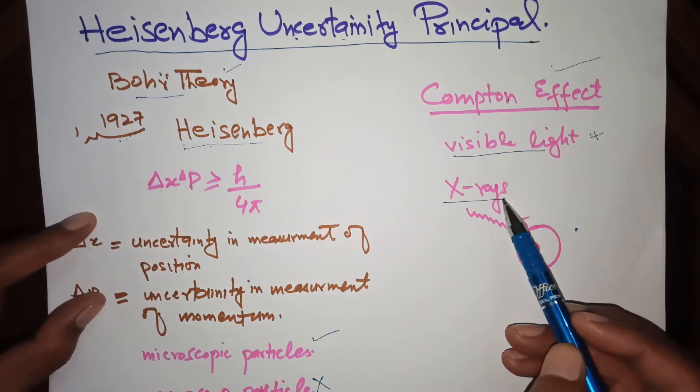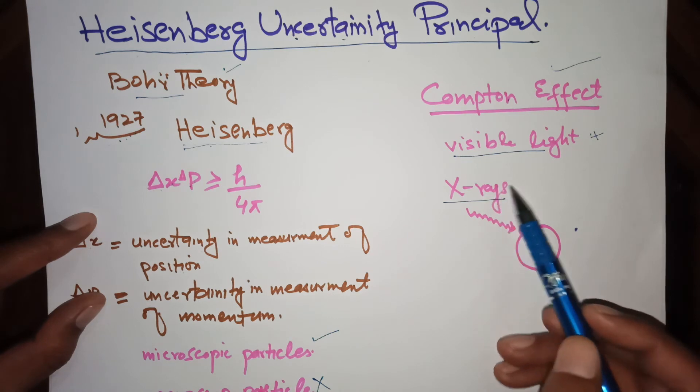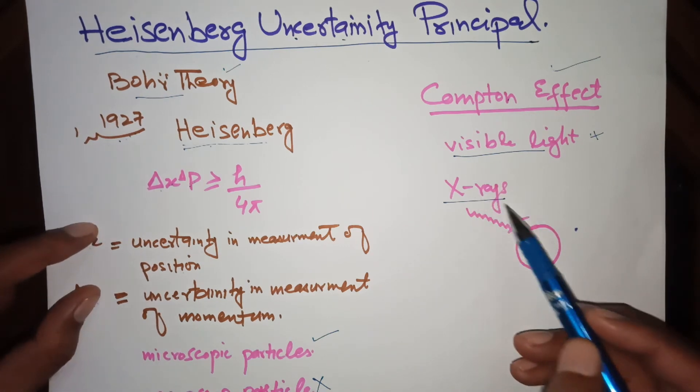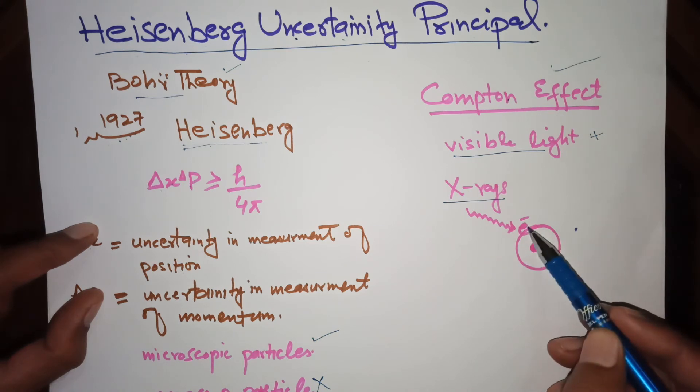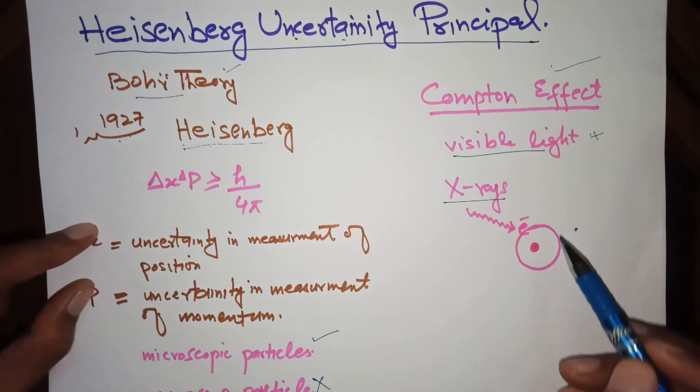Because X-rays have shorter wavelength, they have high energy. So when we use X-rays to find the position of electron that is moving around the nucleus, when X-rays strike the electron, it changes the momentum of electron.